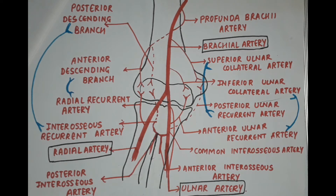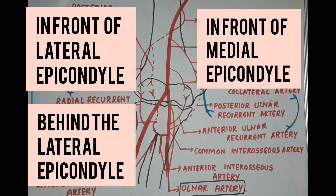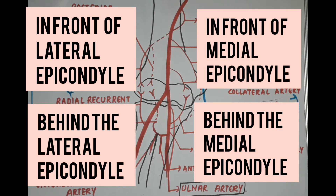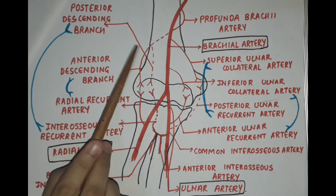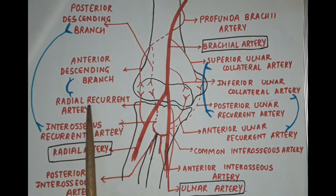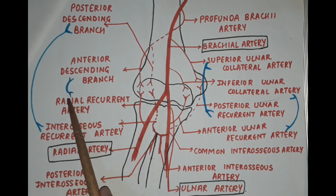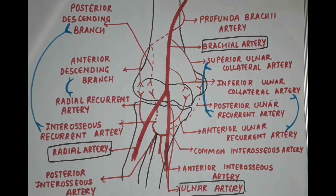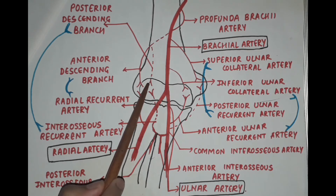The anastomosis can be divided into four parts: in front of the lateral epicondyle, behind the lateral epicondyle, in front of the medial epicondyle, and behind the medial epicondyle. In front of the lateral epicondyle, the anterior descending branch — also known as the radial collateral branch of the profunda brachii artery — anastomoses with the radial recurrent artery of the radial artery.